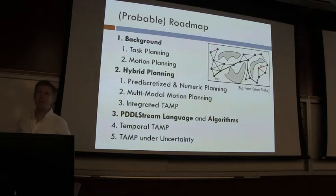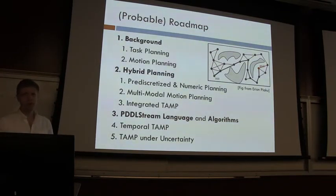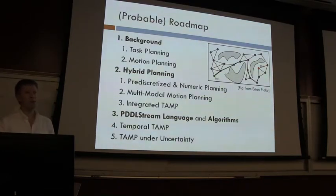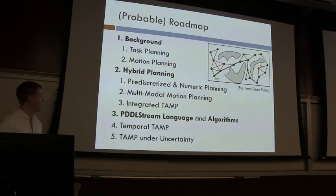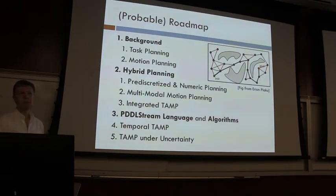Today I'm going to talk about integrating classical planning, which you saw this morning, with robotic planning. The agenda includes a brief review, then discussion of different types of hybrid planning with continuous and discrete variables, then task and motion planning including our approach to framing and solving these problems. If time permits, we'll also cover extensions to temporal planning, multi-agent planning, and TAMP under uncertainty.